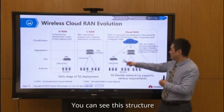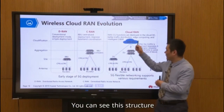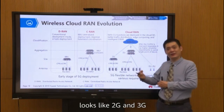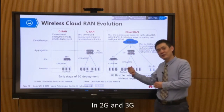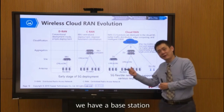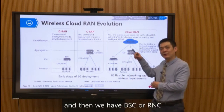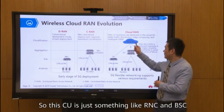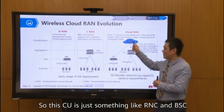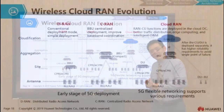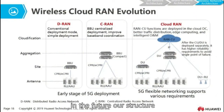This structure looks similar to 2G and 3G. In 2G and 3G, we had a base station and then a BSC or RNC. So this CU is something like an RNC or BSC. In the future, our network structure will return back to something similar to the 2G or 3G architecture.